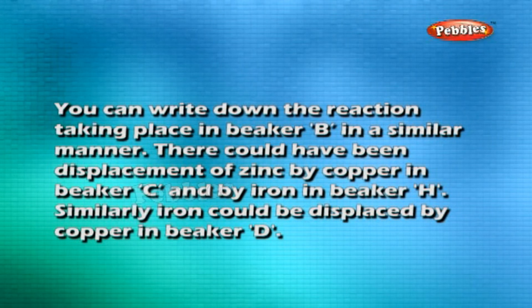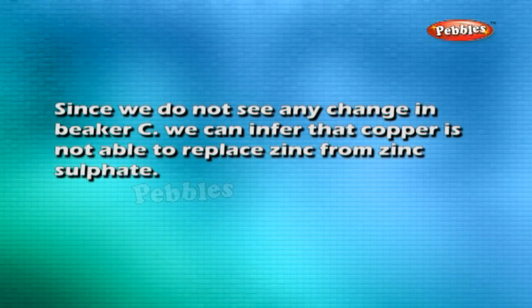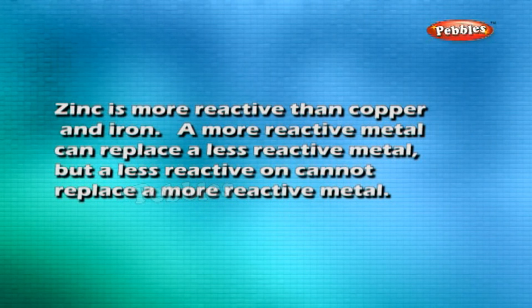You can write down the reaction in beaker B in a similar manner. There could have been displacement of zinc by copper in beaker C and by iron in beaker E. Similarly, iron could be displaced by copper in beaker D. Since we do not see any change in beaker C, we can infer that copper is not able to replace zinc from zinc sulfate. Zinc is more reactive than copper and iron. A more reactive metal can replace a less reactive metal, but a less reactive metal cannot replace a more reactive metal.